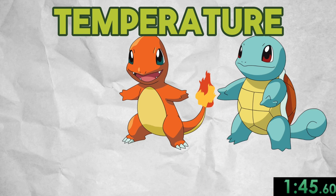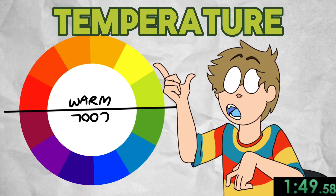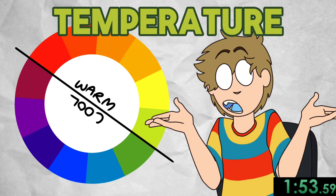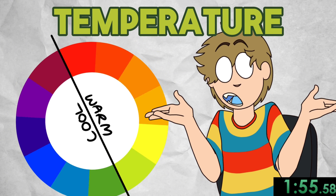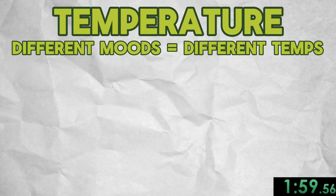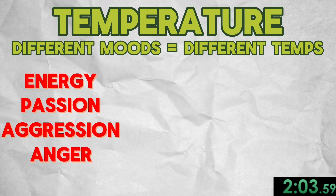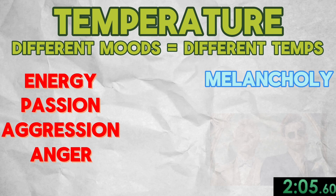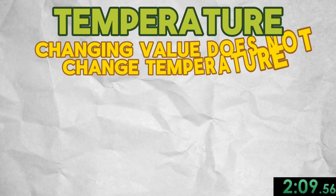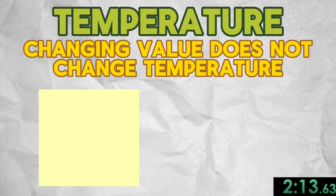Temperature. Colors can feel warm, cool, or neutral, and temperature is often difficult to detect. Fun fact: if you're born male, you probably have more difficulty differentiating color temperature. Different moods or feelings can be represented by color temperature. Warm temperatures are often used to convey feelings of energy, passion, aggression, or anger. Cool temperatures are often used to convey feelings of melancholy, etherealness, sadness, and loneliness. Note that changing the value does not change the temperature, because black and white have no temperature. For example, light yellow is not warmer or cooler than yellow.